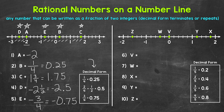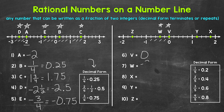Looking at number six, we have point V, which is at zero on the number line. Moving on to number seven, we have point W, which is between zero and negative one. We have negative one fifth, negative two fifths, negative three fifths, negative four fifths, and then negative one. So point W is at negative two fifths, which in decimal form is negative four tenths (−0.4).